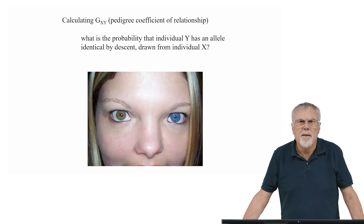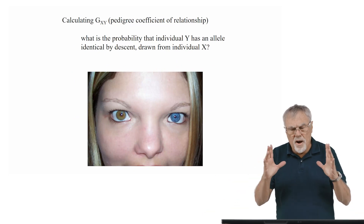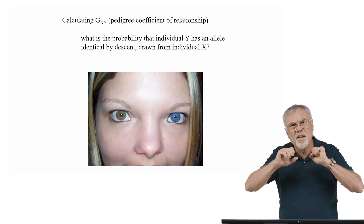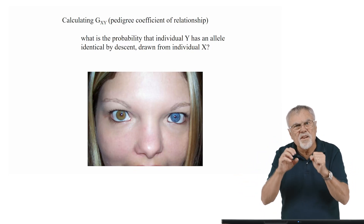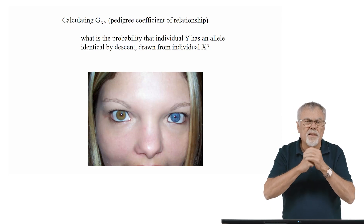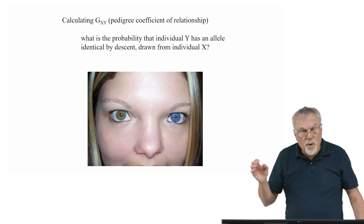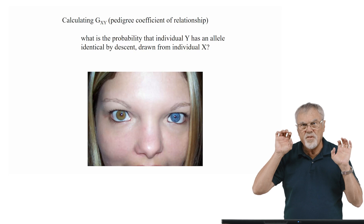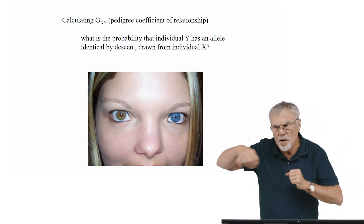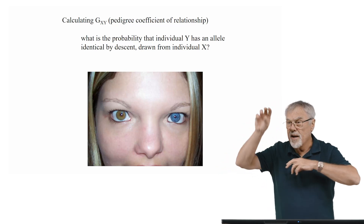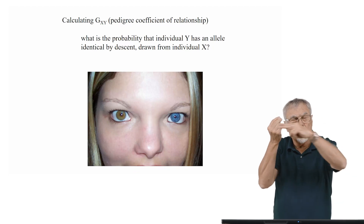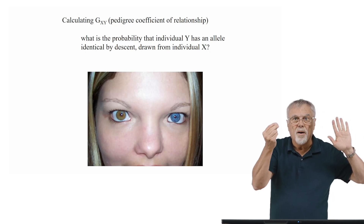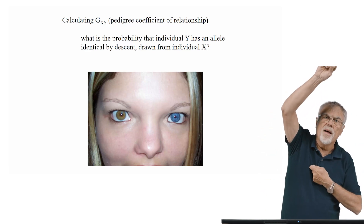I'm going to show you how to calculate a pedigree coefficient of relationship. When you talk about relatedness in the context of inclusive fitness, this becomes important because it goes into an important ratio when calculating the inclusive fitness component of the inclusive fitness equation. What it is, is the probability that an individual, say Y, has an allele identical by descent drawn from individual X. I reach into individual X's genome and randomly pull out one allele at one of their gene loci. What is the probability that individual Y and individual X have the same allele in common from a common ancestor?